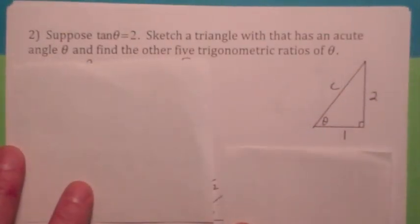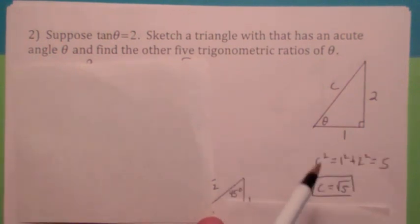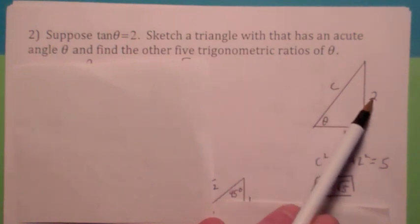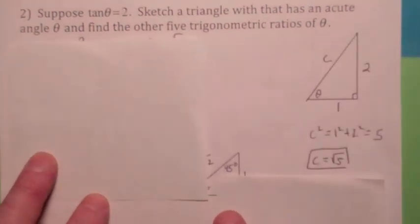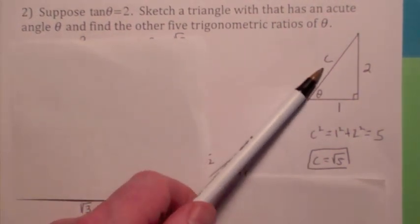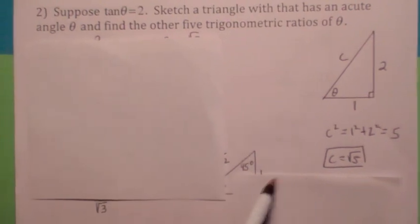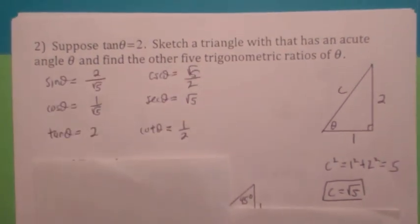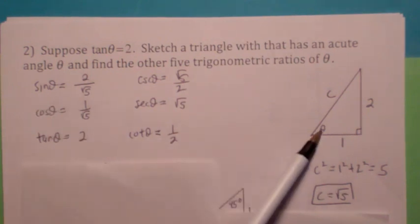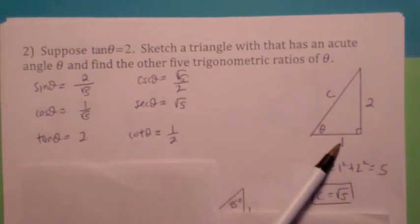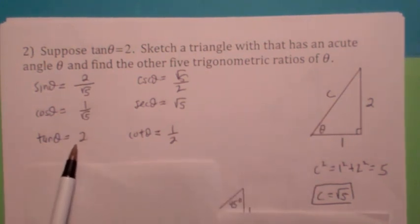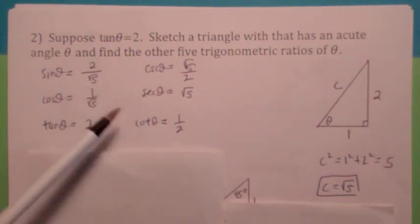Suppose you're given the tangent of theta is 2, and you want to find the other 5 trig functions of theta. If you draw a picture, the tangent of theta is 2 over 1, so the opposite side would be 2 and the adjacent side would be 1. In order to find the rest of the trig functions, we've got to find c using the Pythagorean Theorem — c would be the square root of 5. The sine of theta would be the opposite side over the hypotenuse: 2 over the square root of 5. Cosine of theta would be adjacent over hypotenuse: 1 over the square root of 5. Tangent is 2. Once you have these three, the other three are just the reciprocals.